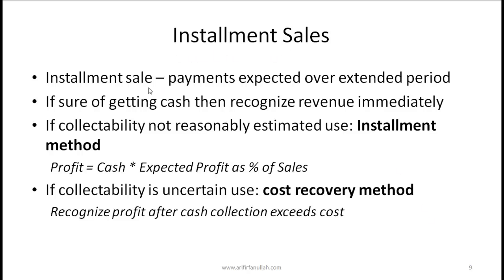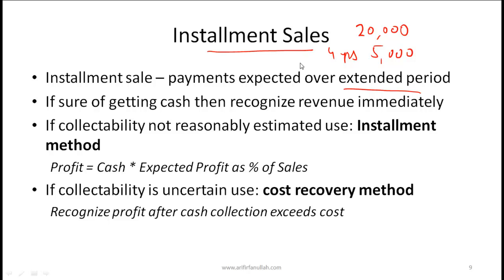Installment sales are where payments are expected over an extended period. For example, you sell a car worth 20,000 and receive payment over 4 years at 5,000 per year. This contrasts with a long-term contract, where it takes multiple years to deliver your product or service — in an installment sale you deliver the product immediately but receive payment over time. If you are sure of getting the cash, you recognize revenue immediately. The accounting entry would be: equity goes up by 20,000 and installment sales receivable on the asset side also goes up.